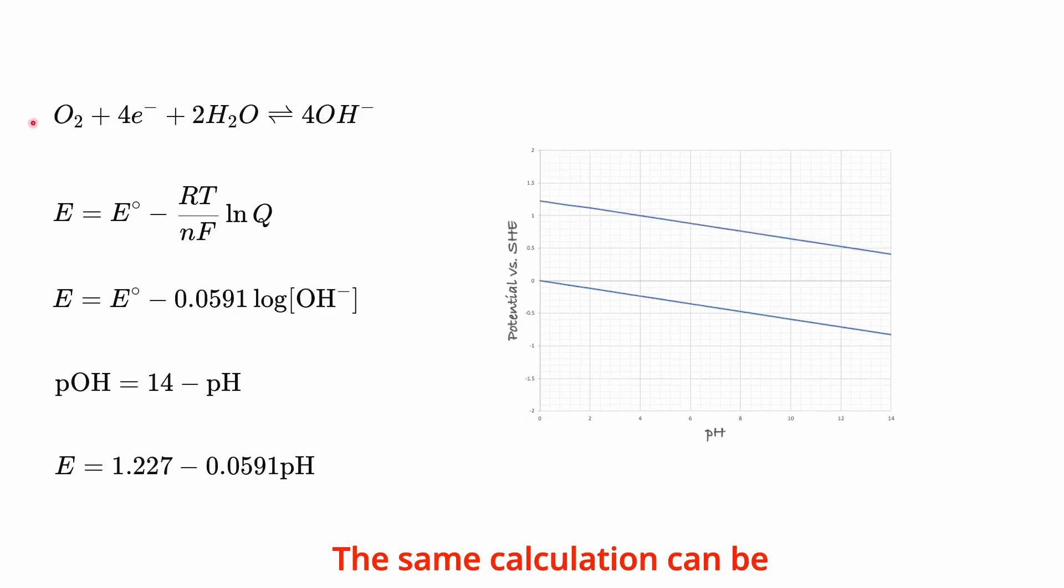The same calculation can be repeated for this reaction involving oxygen molecules and hydroxide ions. Upon working out the maths, we find that the equilibrium potential is 1.227 minus 0.0591 times the pH value.